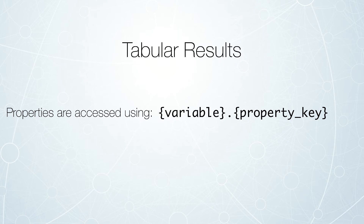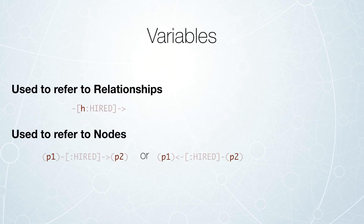Properties are accessed using the syntax you just saw, where we specify the variable as well as the property key. You may have heard me in the last episode referring to variables as aliases — I use the terms interchangeably, but the official term is variable. Variables are used to refer to relationships and nodes that you're defining in your patterns or queries, and you can see the variables highlighted here for each.